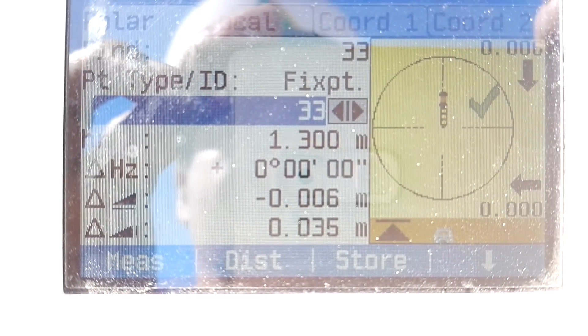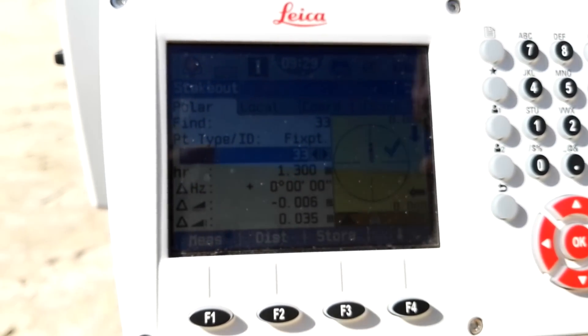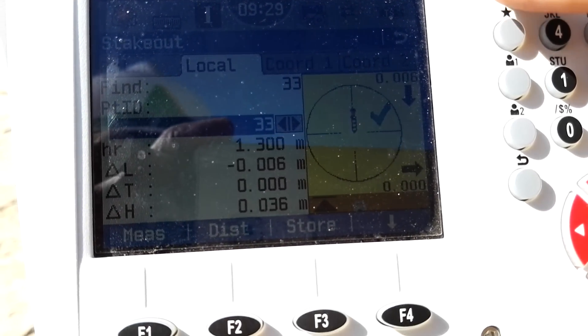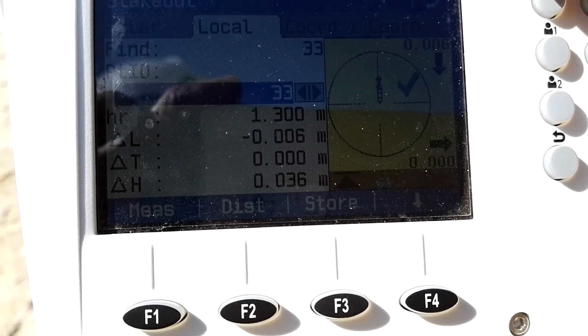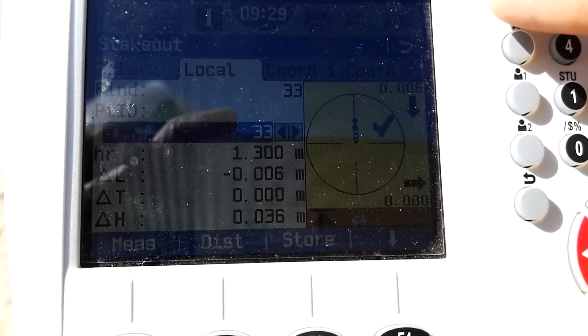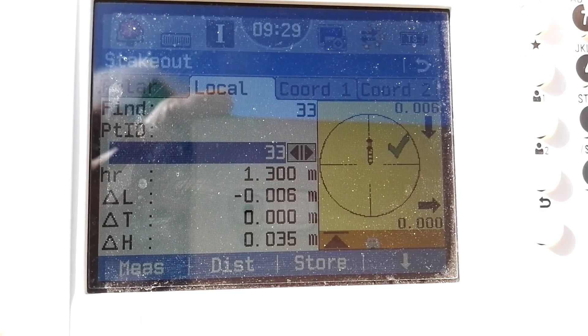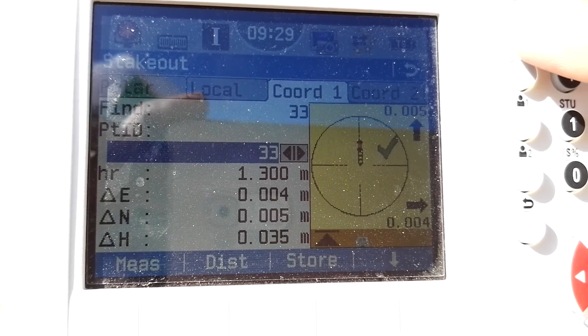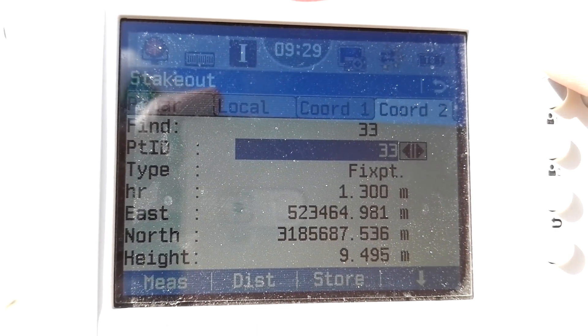So if you want to see I can change this page. As you can see here is the difference in the east 6 millimeters, north 0 and elevation plus 3 and half centimeters. And if you want to see the coordinate you can change the page with this key. And here is the difference between the location. And here is the original coordinate, 3D coordinate.